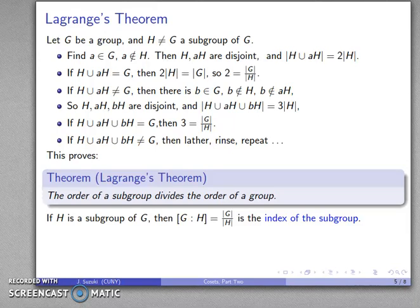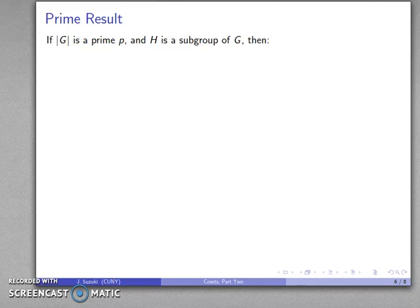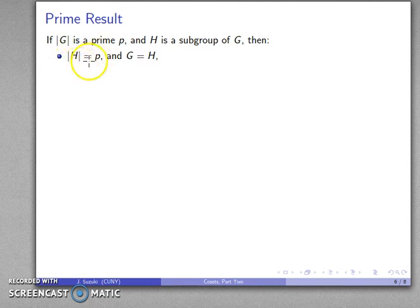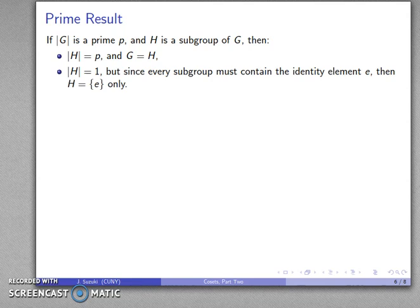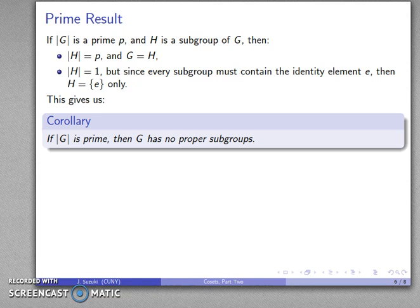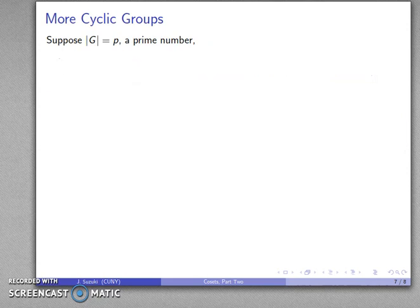It's always useful to think about what this tells us. Suppose my group has a prime order and I have a subgroup. The order of the subgroup must divide the order of the group. The only divisors of a prime number are the prime itself and 1. If the order of the subgroup is P, then H has P elements and G has P elements, so they must be the same thing. If the order of the subgroup is 1, and since every subgroup must contain the identity, my subgroup can only be the identity element. So if the order of a group is prime, then G has no proper subgroups — every subgroup is either just the identity or the whole group.